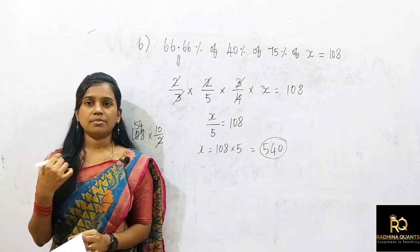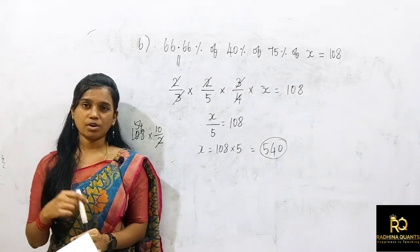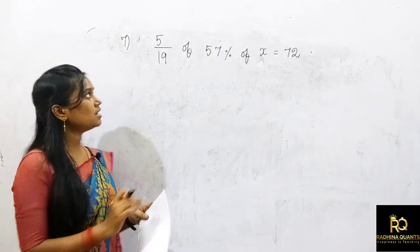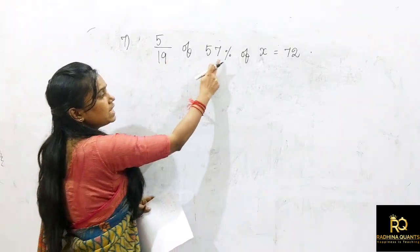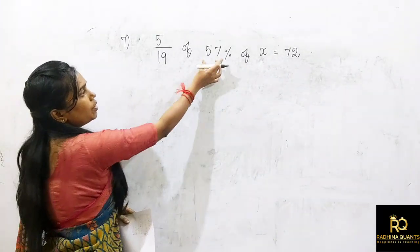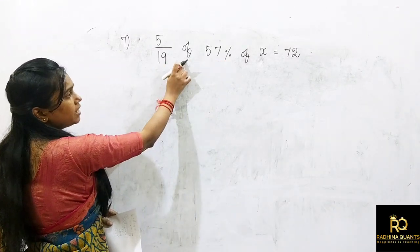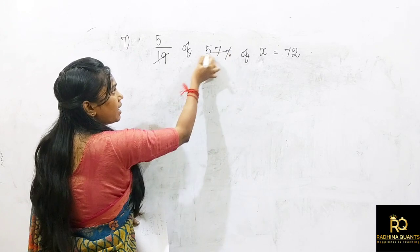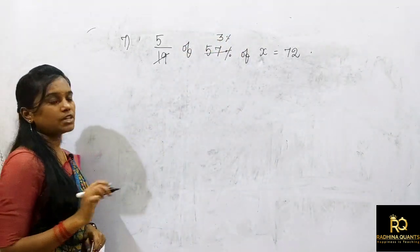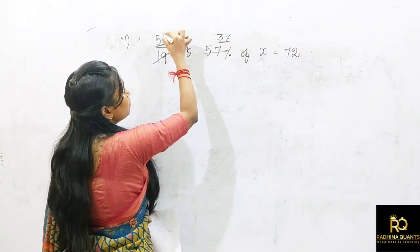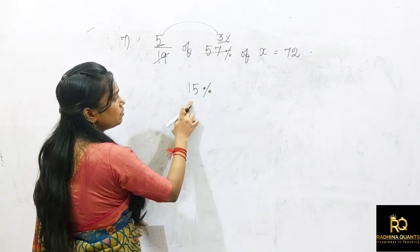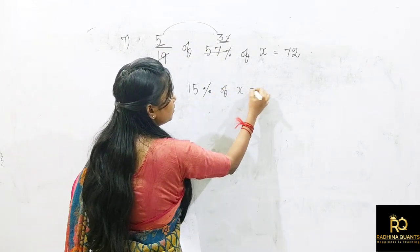Next question: 5/19 of 57% of x equals 72. There is a percentage of 19 — it will connect. 57 divided by 19 is 3 times. So 5 × 3% = 15%. Therefore 15% of x equals 72.